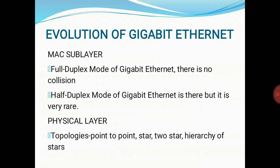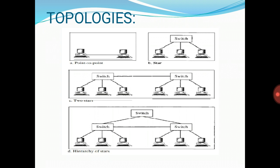The physical layer in Gigabit Ethernet is more complicated than in standard or Fast Ethernet. The topologies used are point-to-point, two-star topology, and hierarchical star topologies. In the diagrams: figure A shows point-to-point with two PCs connected directly; figure B shows three devices connected via a switch, defining a star topology; figure C shows a two-star topology with three individual PCs connected via a switch; and figure D shows a switch connected to the individual switches of the two-star topologies.